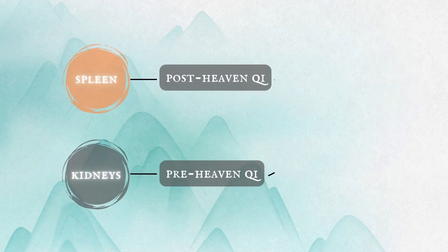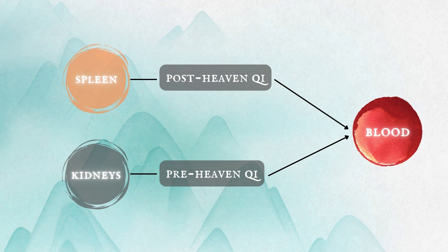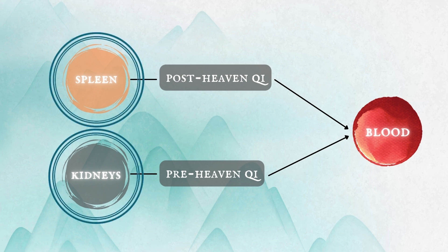Therefore, we can say that blood is generated by the interaction of post-heaven qi of the stomach and spleen and pre-heaven qi of the kidneys. That's why, to nourish blood, we need to tonify the spleen and kidneys.